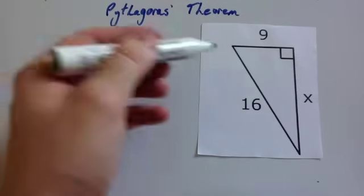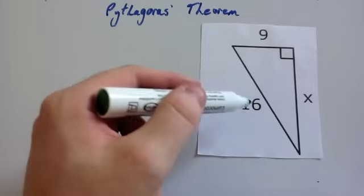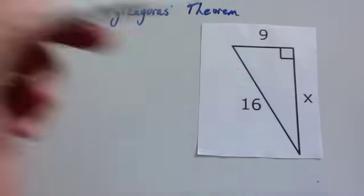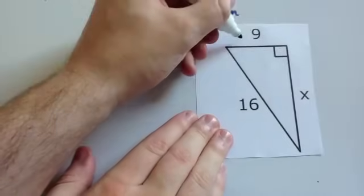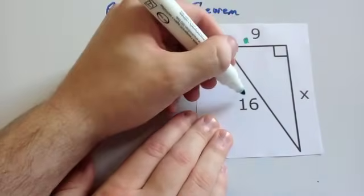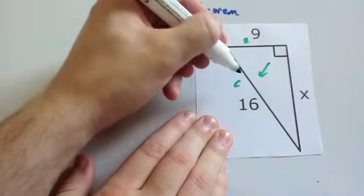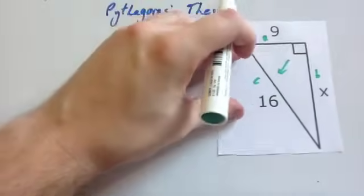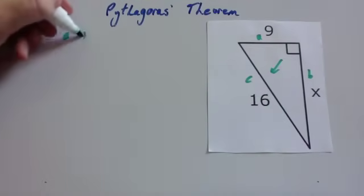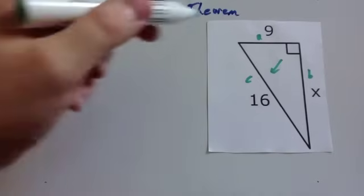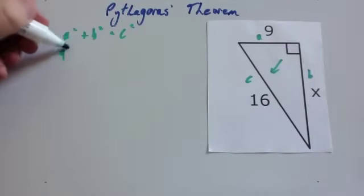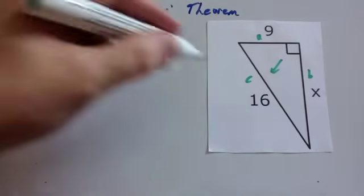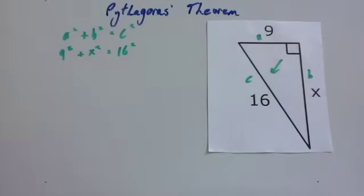Now this question is slightly different. It's given us the longest side — a hypotenuse of 16 — and one of the short sides. So we're going to use Pythagoras' theorem to find the other short side. So let's label them. 9 looks like it's the smallest, so let's call that a. 16 is definitely the longest, so that's c — it's the hypotenuse — and x is b. So let's use Pythagoras' theorem: a squared plus b squared equals c squared. a is 9, so 9 squared plus x squared equals c squared. c is 16, so 16 squared.